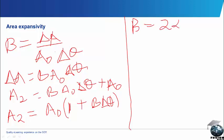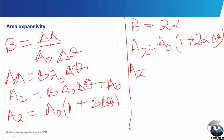So rewriting, we have A2 to be equal to A0 bracket 1 plus, instead of beta we can replace with 2 alpha, 2 alpha delta theta. So some textbooks write A0 as A1, so we can still write A2 to be equal to A1 bracket 1 plus 2 alpha delta theta, and that is the expression for final area.